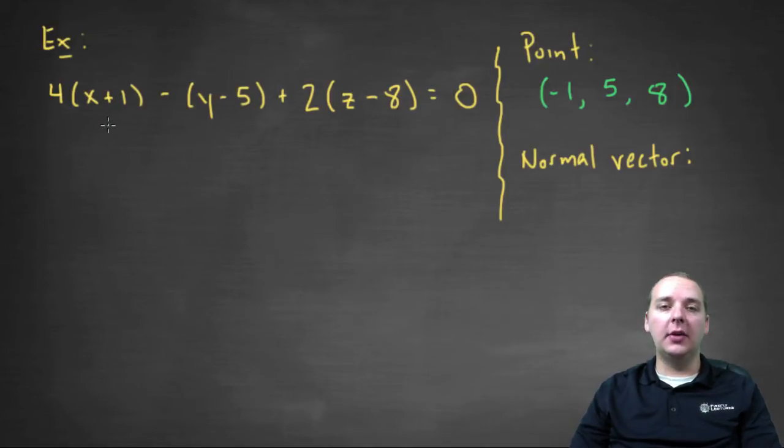And the normal vector are the coefficients, the A, the B, and the C. So the normal vector would be four, comma, negative one, comma, two. And just pay attention and note that this is a point, and this is a vector, and those are very different things. So don't confuse the two.